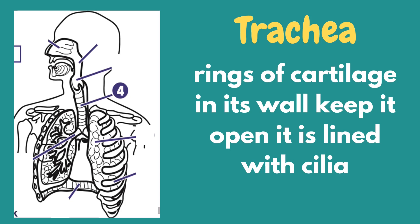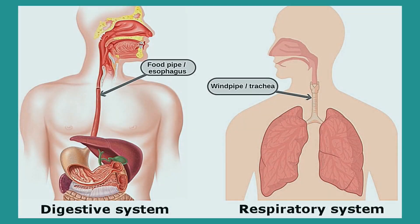Next is the windpipe, commonly known as the trachea. The trachea has rings of cartilage in its wall that keep it open, and it is also lined with cilia. Since nasal hair cannot fully filter the air that gets inside our nasal cavity, the trachea serves as another filter. In our body, the windpipe or trachea is in the same location as the food pipe or esophagus — same location, but serving a different function.